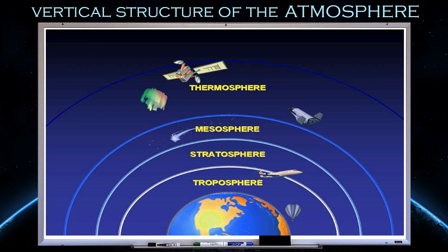Before going into that, we will first see why we call all these layers 'spheres' — like troposphere, stratosphere. The whole atmosphere is enveloping the Earth like a blanket. Since the Earth is almost in the shape of a sphere, whatever is enveloping the Earth also takes the shape of a sphere. That's why we call those layers troposphere, stratosphere — because they are also in the shape of spheres.